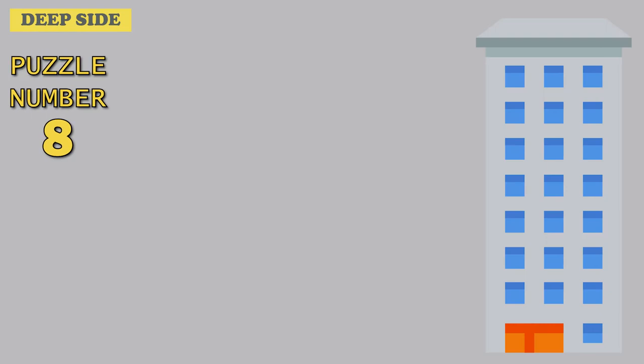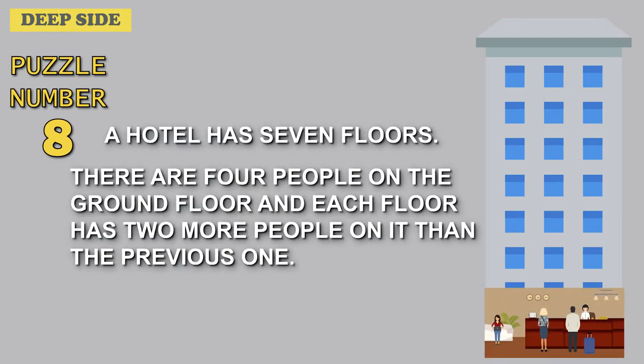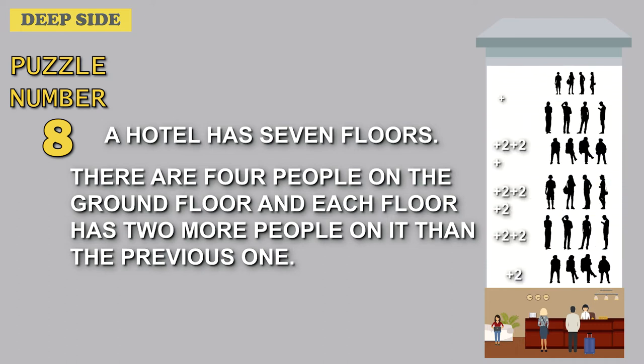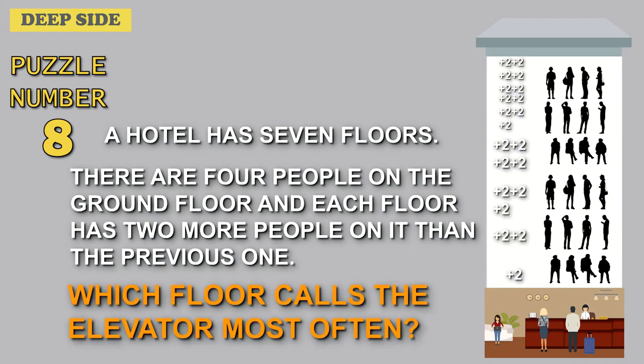Puzzle number 8. A hotel has seven floors. There are four people on the ground floor and each floor has two more people on it than the previous one. Which floor calls the elevator most often?